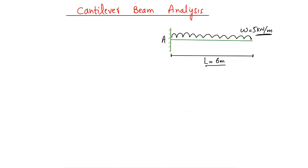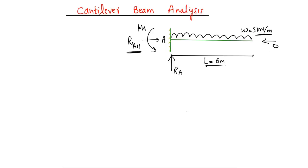Let's consider this is support A — it is a fixed support, so it will take the vertical reaction RA, the horizontal reaction HA, and the moment MA. However, since there is no horizontal force acting on this beam, the horizontal component HA is equal to zero.